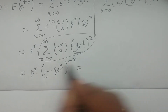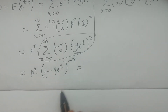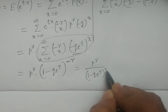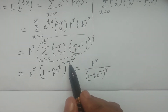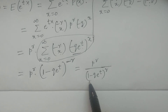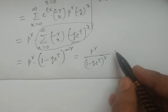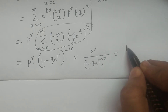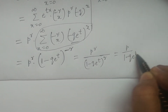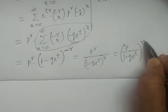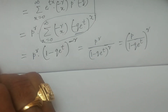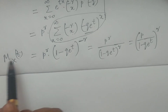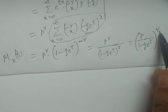Therefore, moving the (−r) power into the denominator, the moment generating function M_X(t) equals p to the power r divided by (1 − q e to the power t) to the power r, which simplifies to [p / (1 − q e to the power t)] to the power r. This is the moment generating function of the negative binomial distribution.